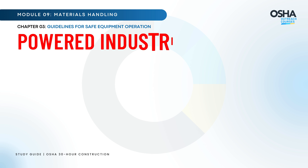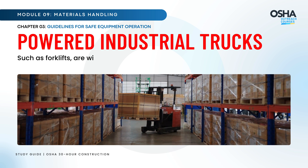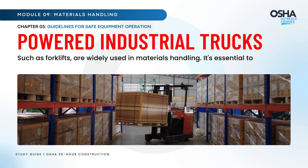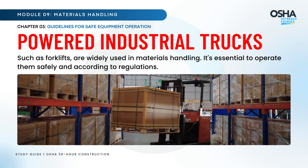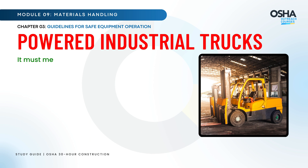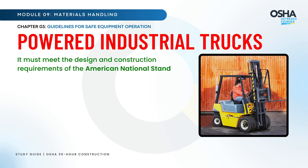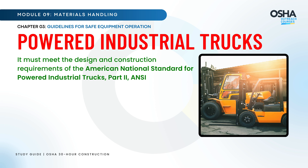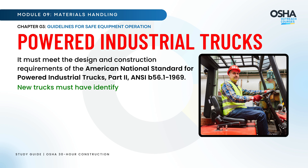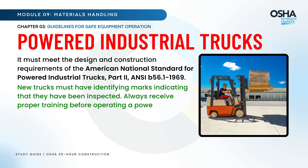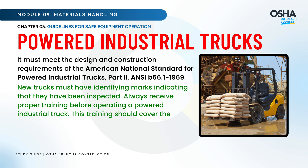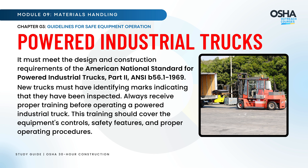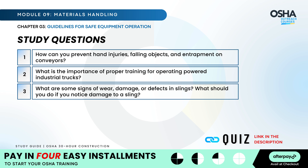Powered industrial trucks such as forklifts are widely used in materials handling and must be operated safely according to regulations. They must meet the design and construction requirements of the American National Standard for Powered Industrial Trucks, Part 2 — ANSI B56.1-1969. New trucks must have identifying marks indicating they have been inspected. Always receive proper training before operating a powered industrial truck, covering the equipment's controls, safety features, and proper operating procedures.